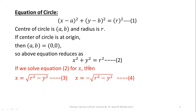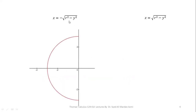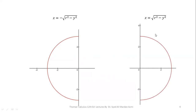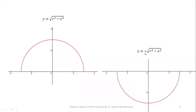If we solve for x we get equations 3 and 4, and if we solve for y we get equations 5 and 6. x equals minus square root of (r squared minus y squared) is a semicircle in the left half plane, in the second and third quadrants. y equals square root of (r squared minus x squared) is a semicircle in the upper half plane, in the first and second quadrants. y equals minus square root of (r squared minus x squared) is a semicircle in the lower half plane, in the third and fourth quadrants.